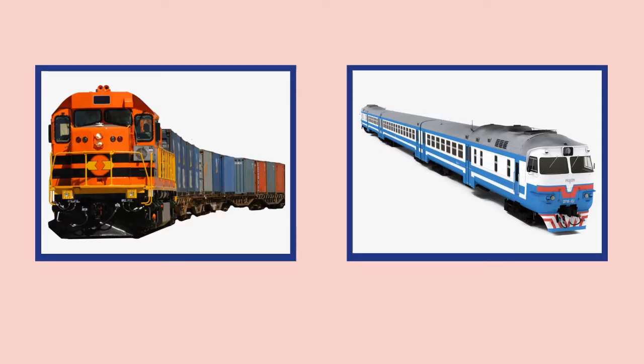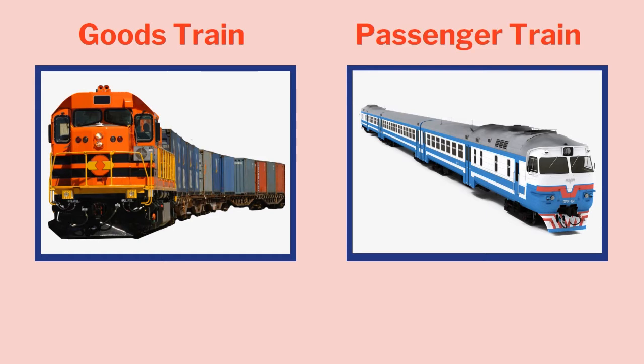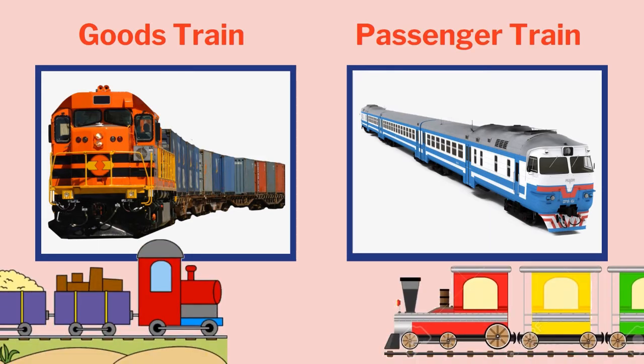Students, there are two kinds of trains: goods trains and passenger trains. Goods trains are also called freight cars — yaani malgaadi. Yeh anaaj, koela, paani, petrol, logon ka saman ek jaga se dousari jaga le jati hai. Passenger trains logon ko ek jaga se dousari jaga le jati hai. Yeh railgaadiyaan bina ruke chalti rehti hai, 24-7.